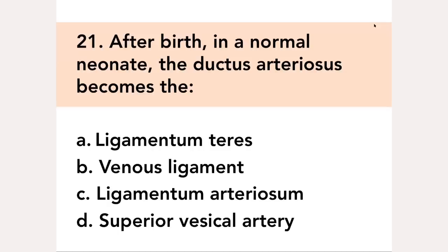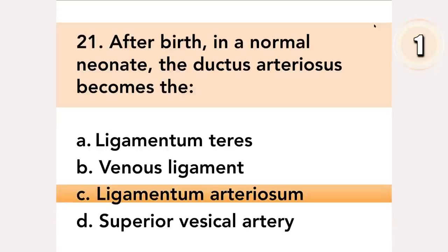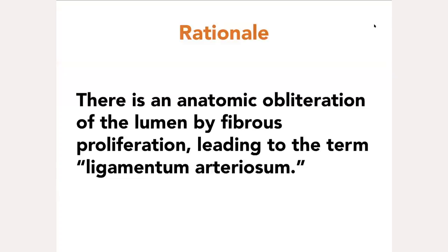After birth, in a normal neonate, the ductus arteriosus becomes the: A. Ligamentum teres, B. Venous ligament, C. Ligamentum arteriosum, D. Superior vesicle artery. Answer: C. Ligamentum arteriosum. There is an anatomic obliteration of the lumen by fibrous proliferation, leading to the term Ligamentum arteriosum.